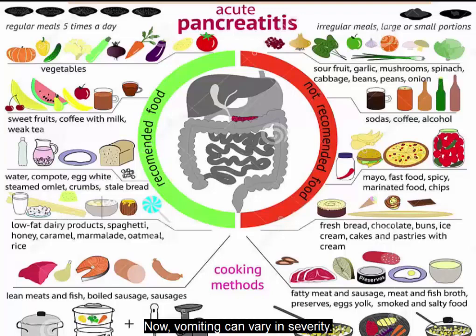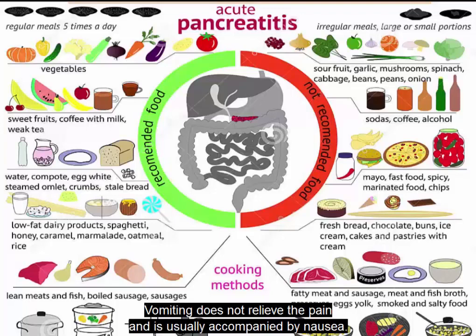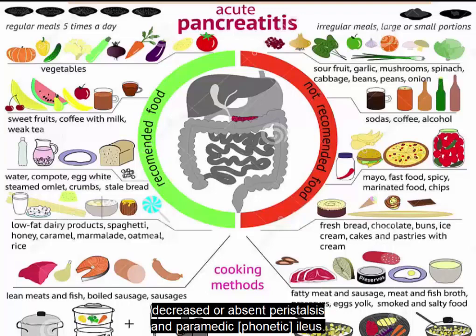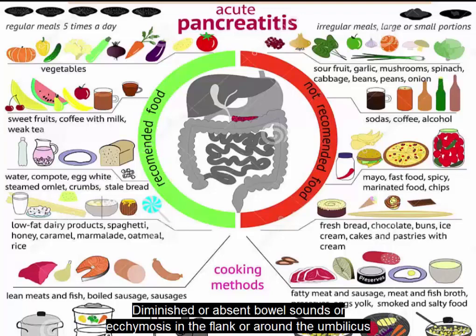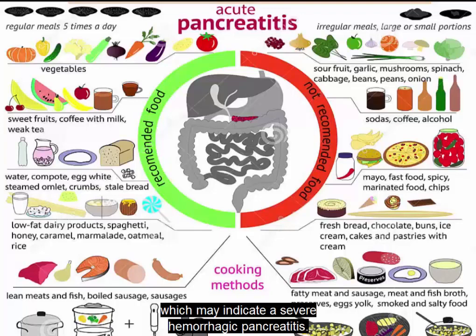Vomiting can vary in severity and is worsened by ingestion of food or fluid. Vomiting does not relieve the pain and is usually accompanied by nausea. The abdominal assessment would reveal epigastric tenderness to deep palpation, rigidity, tenderness, guarding, distension, decreased or absent peristalsis, and paralytic ileus. Malabsorption and steatorrhea may occur late in the disease. Diminished or absent bowel sounds, or ecchymosis in the flank or around the umbilicus, may indicate severe hemorrhagic pancreatitis.